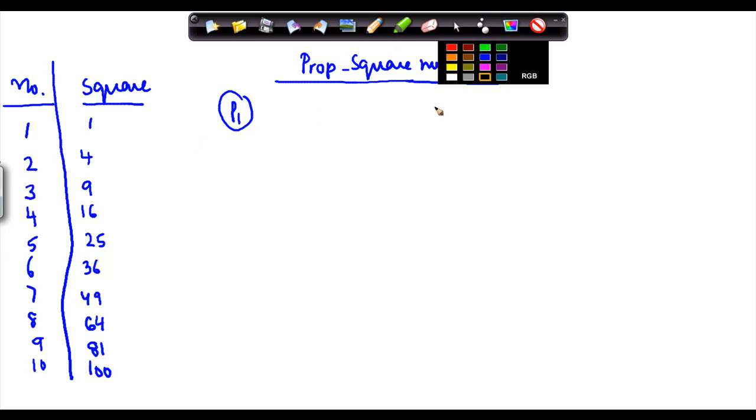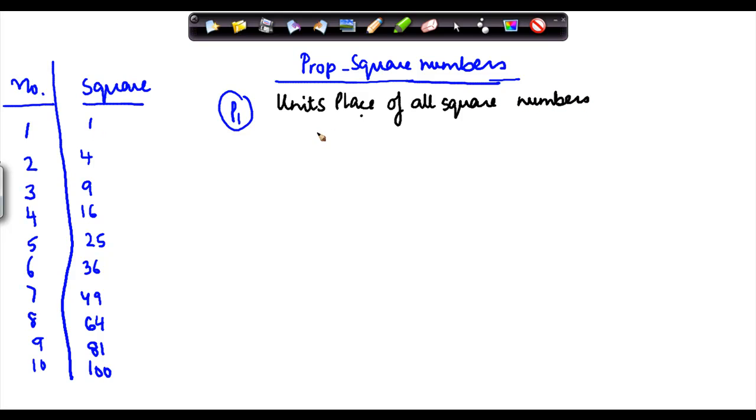Now if you see all these square numbers at the units place, what do I notice? I have 1, 4, 9, 6, 5, again 6, then I have again 9, then I have again 4, then I have 1 and I have 0.